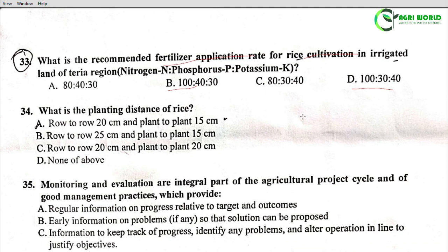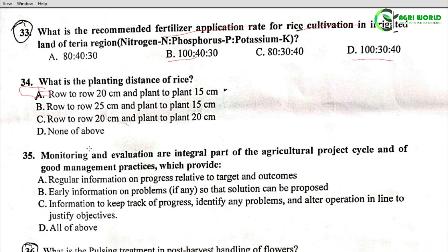Question 34: What is the planting distance of rice? Option A: row to row 20 cm and plant to plant 15 cm; Option B: row to row 25 cm and plant to plant 15 cm; Option C: row to row 20 cm and plant to plant 20 cm; Option D: none of the above. Option A is the correct answer: row to row 20 cm and plant to plant 15 cm.